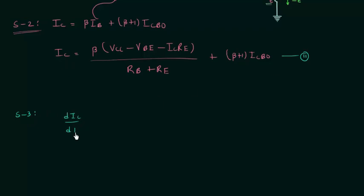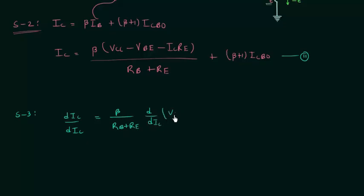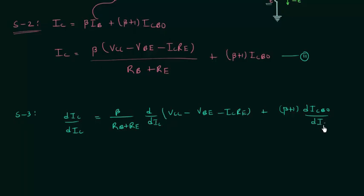On the left hand side we have dIC/dIC. β is constant, and RB and RE are both constant, so β/(RB + RE) is also constant, so we do not need to differentiate those terms. We only need to differentiate VCC minus VBE minus IC·RE with respect to IC. β+1 is constant, so we have the differentiation of ICBO with respect to collector current IC.